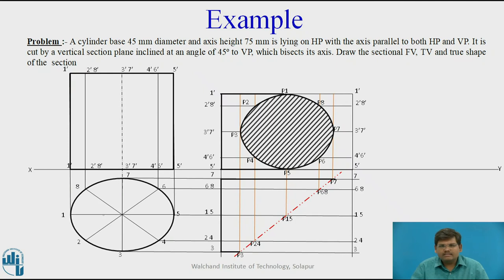Now darkening of the edges. As the direction of observation is from the bottom of the top view, this part has been removed whereas this part has been retained. Darken the outline of the solid in the left-hand side part of the cutting plane. Similarly in the front view, the left-hand side part has to be darkened. This is the complete projection of the cylinder when it is cut by a cutting plane making an angle of 45 degrees to VP.